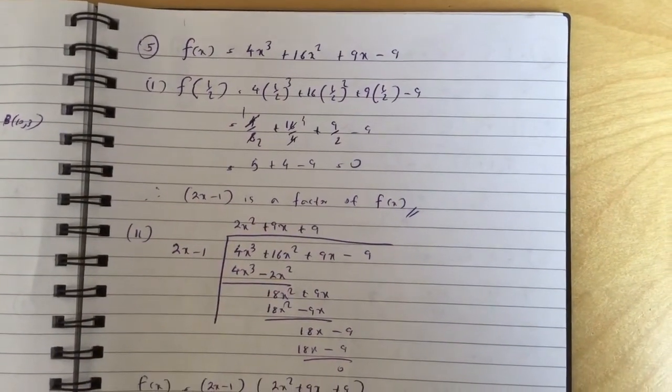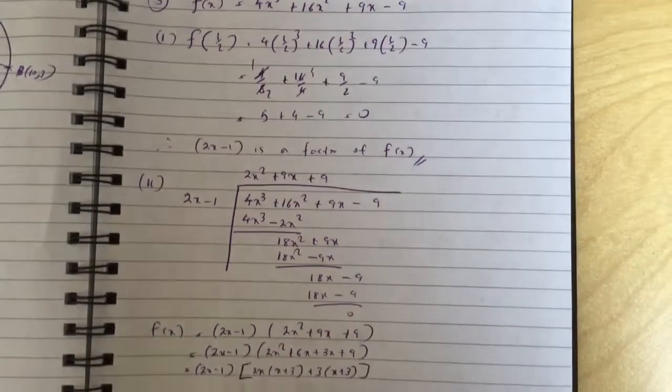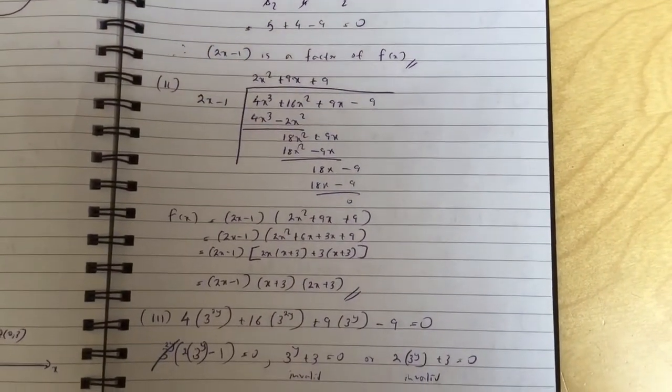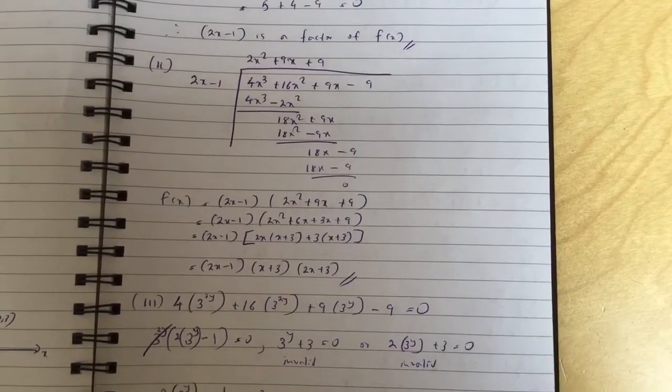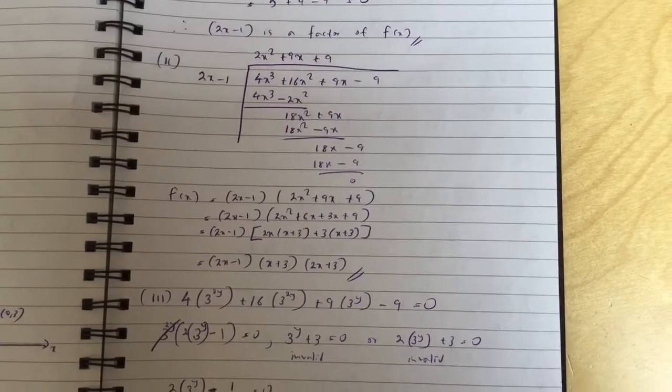Here you get zero, so therefore 2x - 1 is a factor. To get the other factors you do long division and then factorize the quadratic, and you get the three factors: 2x - 1, x + 3, and 2x + 3.